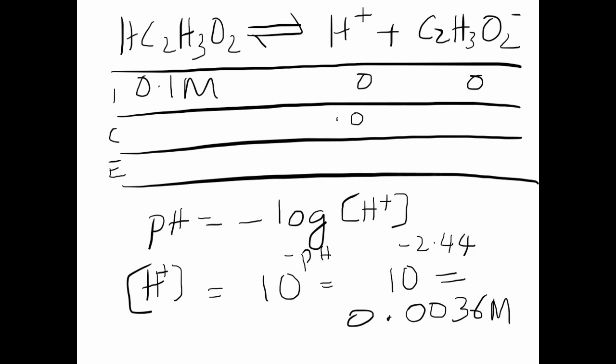Which we calculated from the pH is going to be 0.0036 M, and that's the same for the lactate ion, 0.0036 M. This will be a decrease, therefore minus 0.0036 M. And if you're writing the equilibrium expression, it's going to be 0.1 minus 0.0036 M, 0.0036 M, 0.0036 M.